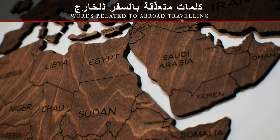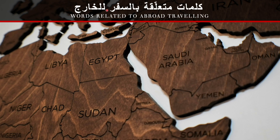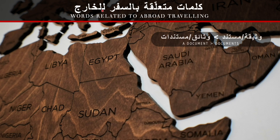Starting with words related to abroad traveling. Abroad in Arabic is الخارج. When you say abroad traveling: السفر للخارج. You need a preposition before الخارج related to the word it's conjugated with. For traveling you use لـ: السفر للخارج. For studying abroad you use في: الدراسة في الخارج.